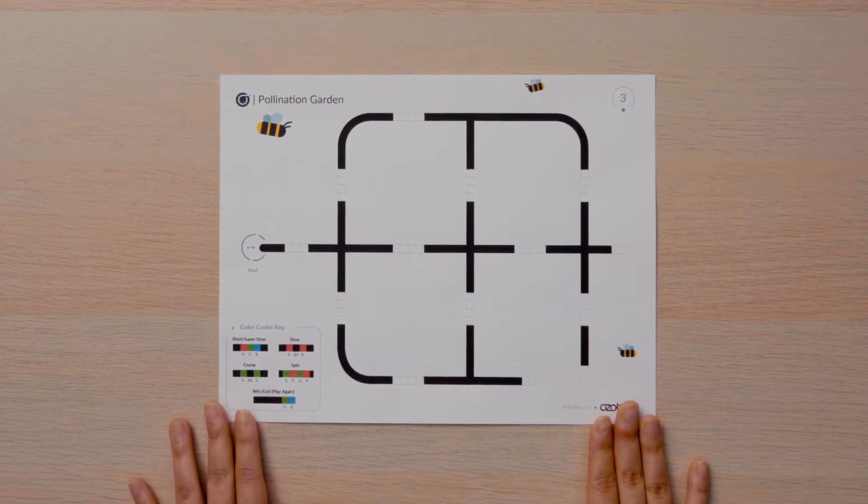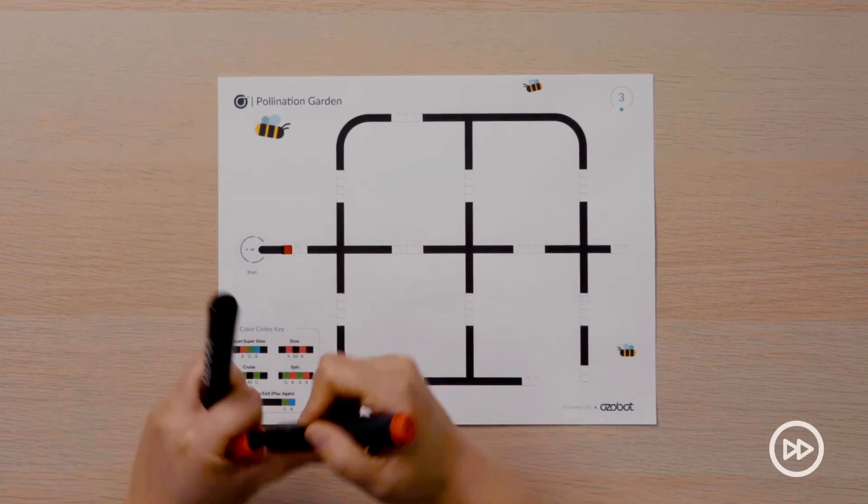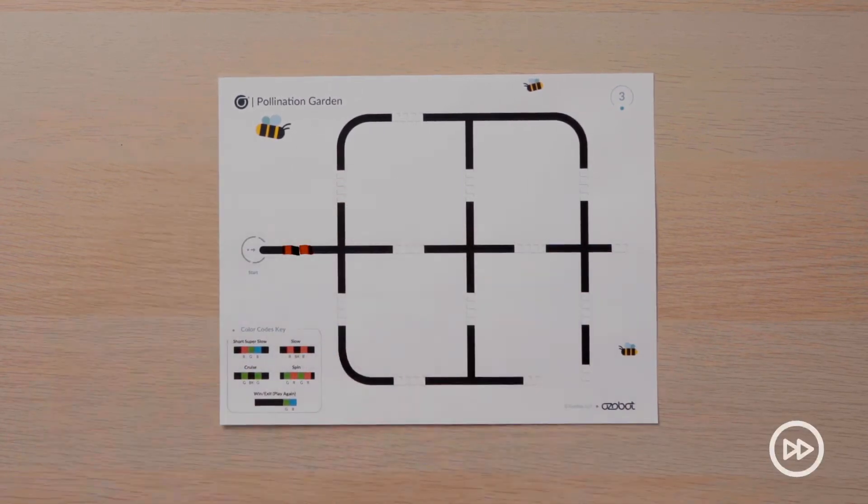The first missing color code shows three empty boxes and will be the color code to set the speed of your bot. I am going to have my pollinator travel slow, so I will put in the slow code.